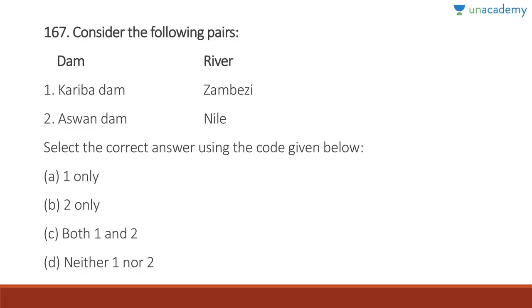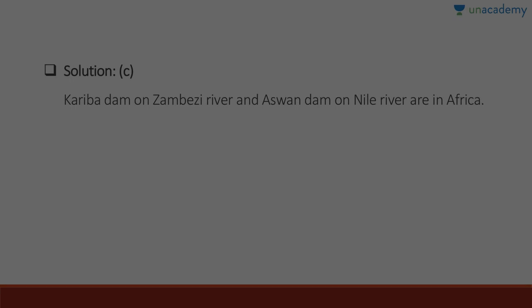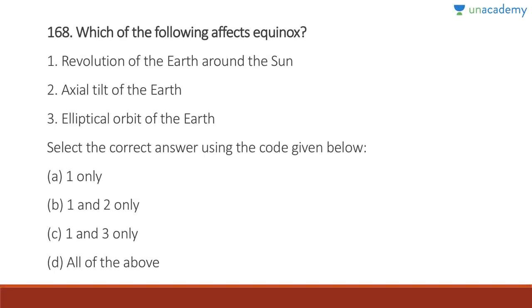Question 167: Kariba Dam is on the Zambezi River — absolutely correct. Aswan Dam is on the Nile River — also correct. Both are in Africa. Answer is C, both one and two.